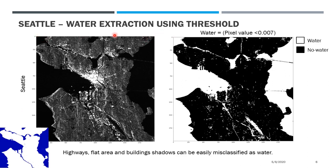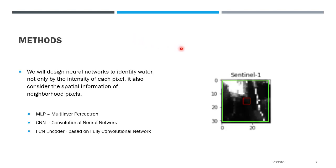Here we apply the threshold method to a real satellite SAR image of a city, and this is the ground truth of the city — all the blue color is water. If you compare the result of the threshold method with the ground truth, you can see the method is not good; there is a lot of misclassification. For example, many highways and flat areas have been misclassified as water. We think this is because the threshold method only considers pixel information and does not consider the neighborhood information of that pixel.